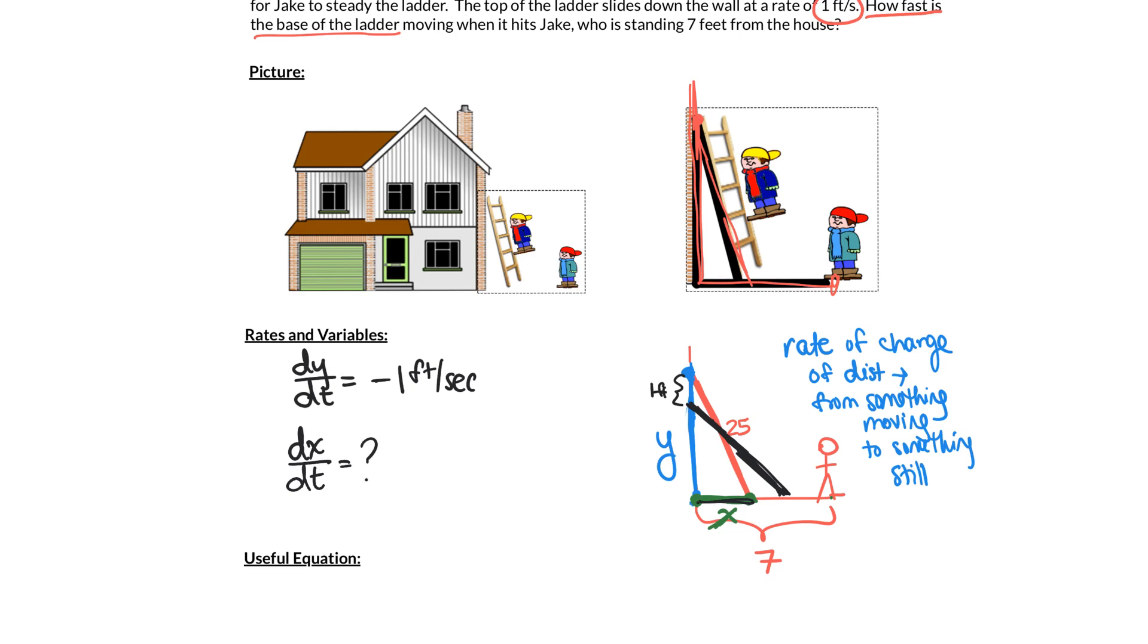And then the other rate, the rate we're trying to find, is how fast the base of the ladder is moving. And so that's going to be how fast this distance x is changing as we change time. So dx/dt equals question mark. That's what we want to find. Now it's really important: there's no reason to believe that dx/dt is a constant number throughout this whole problem.